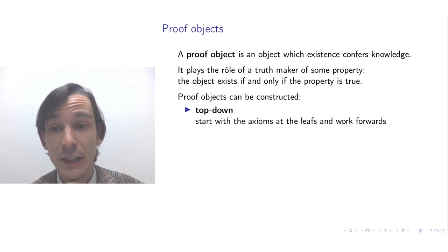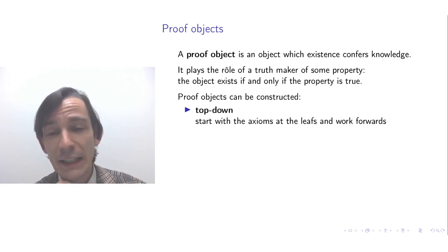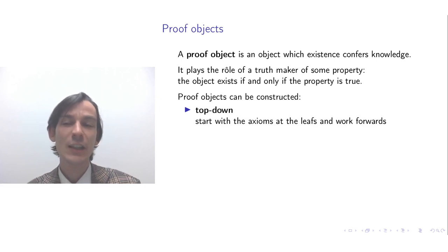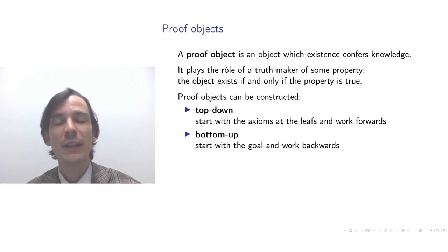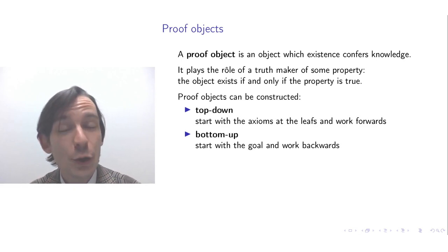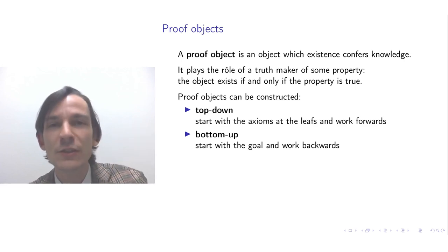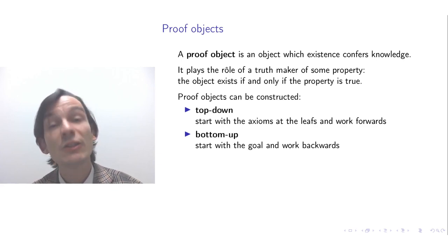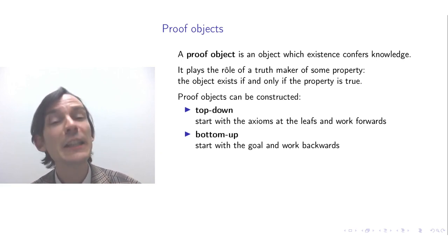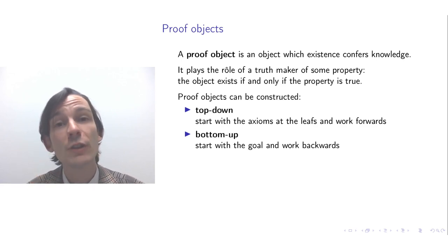In a proof tree, to establish a property you apply rules. The leaves of the proof tree are applications of axioms, while the internal nodes are applications of proof rules. As a concrete example, consider the property of equality of two integers x and y. You can supply a proof that they are equal: if x and y are both 0, then 0 equals 0 is an axiom. If you have a proof that x equals y, you can also construct a proof that x plus 1 equals y plus 1.